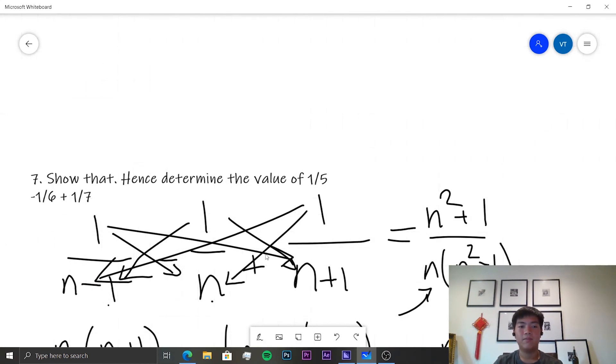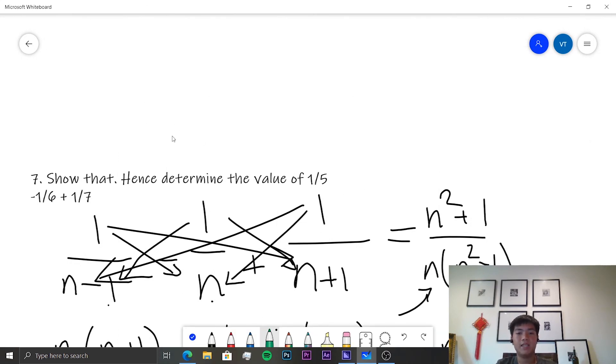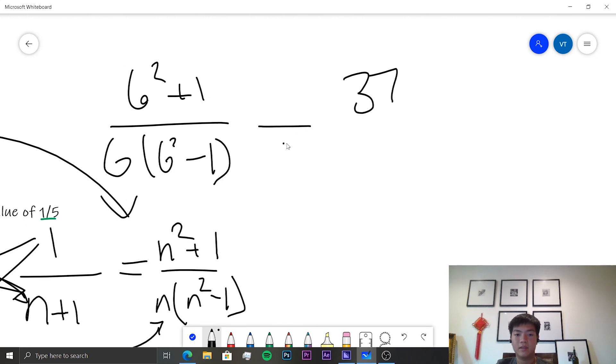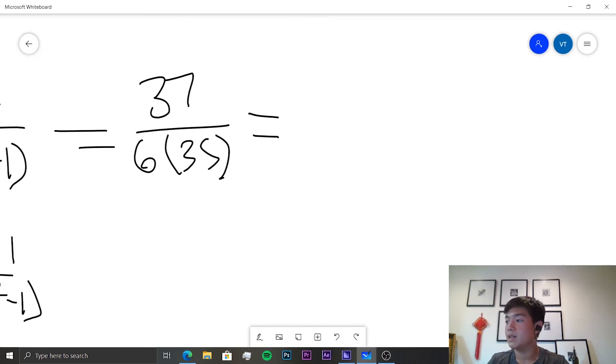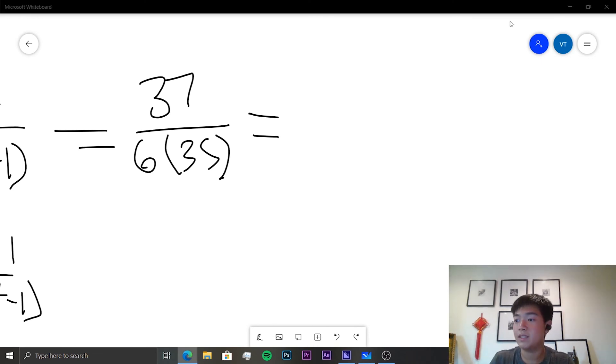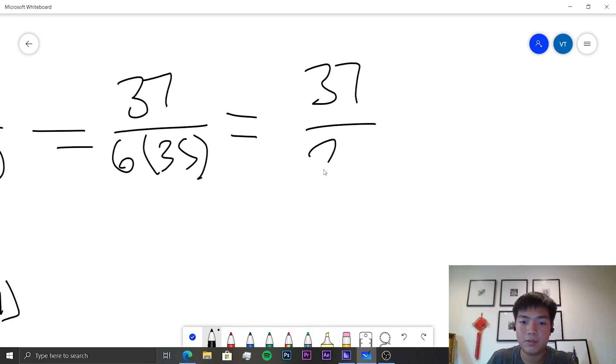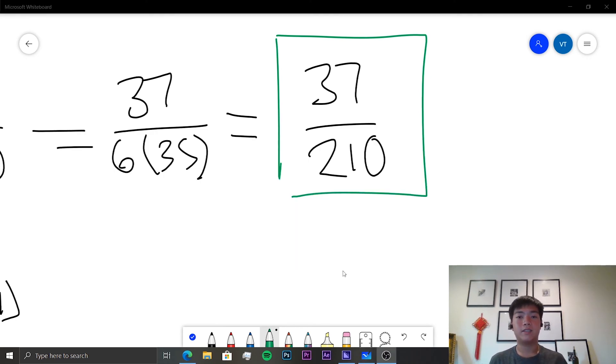And we want to determine 1/5 - 1/6 + 1/7. In this case, we can see that this is the same as what we have down below here, and it's when n is equal to 6. So we can simply substitute n into here. We have (6²+1)/(6(6²-1)). So that's 37 divided by 6 times 35, which is equal to, pull out a calculator, 6 times 35 is equal to 210. So the answer is simply equal to 37/210.